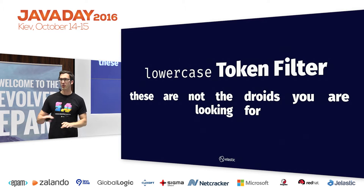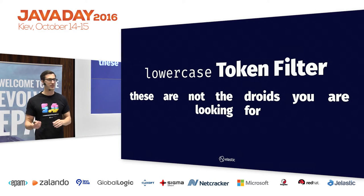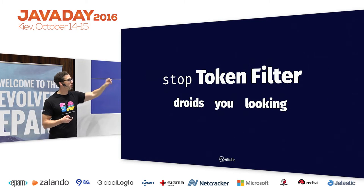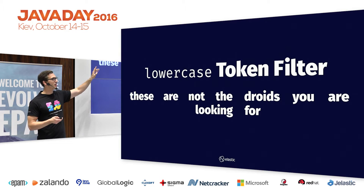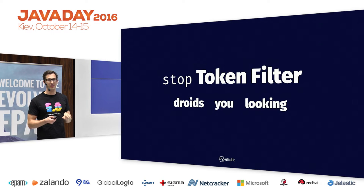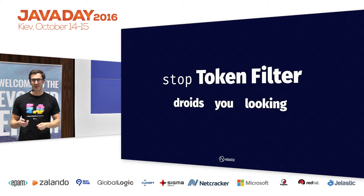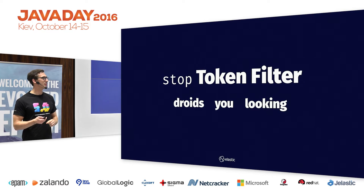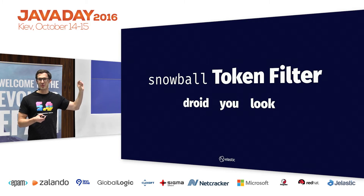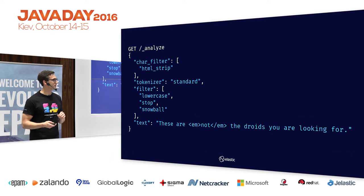The next step is we throw it through a lowercase filter because we don't care about uppercasing and lowercasing — just 'these' and a few others changed. Then we remove the stop words. Here much more is happening: 'these are not the droids you are looking for' — after removing stop words, only 'droids,' 'you,' and 'looking' remain, because everything else is a stop word. And then we actually stem that down: 'droids you looking' becomes 'droid you look.' That is the word stem — this is what remains after throwing it through the entire Elasticsearch pipeline.